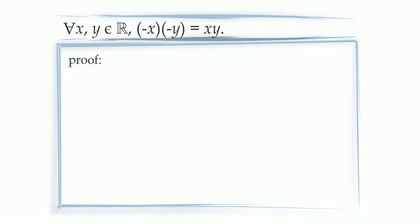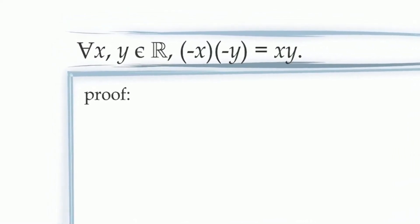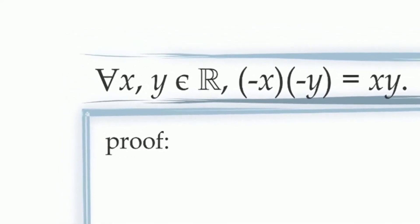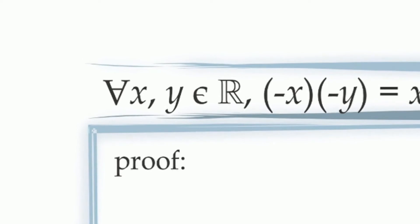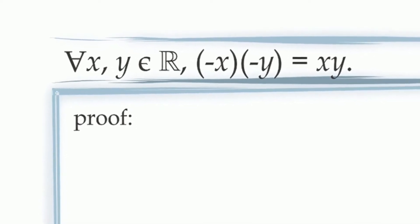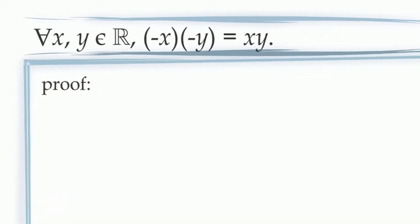To begin, just as in Propositions 1 and 2, we notice that this is a general statement about all real numbers. We can see this from the presence of the universal quantifier that says for all values of x and y in the real numbers. This means we need to begin our proof by introducing arbitrary constants x and y, using a statement along the lines of: let x and y be elements of the real numbers.